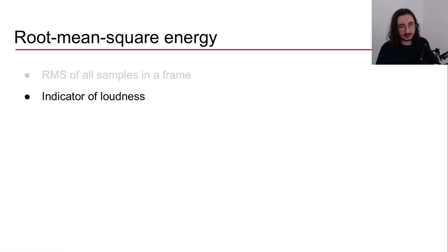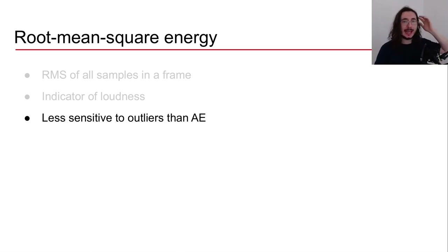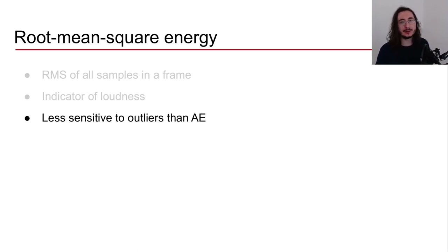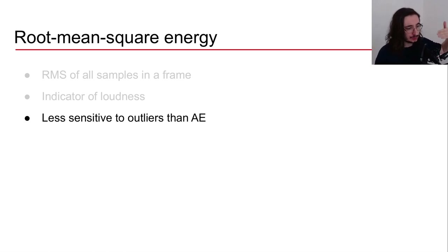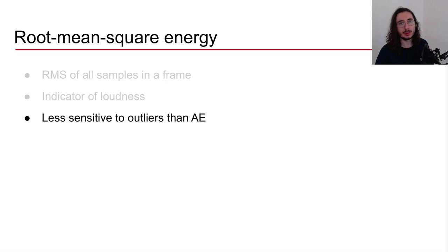Root mean square energy is also an indicator of loudness because energy is strictly related to loudness. A key advantage is that it is less sensitive to outliers than amplitude envelope — instead of sampling a single value, we get information from all samples in the frame and compute the RMS across them, making it more robust to amplitude spikes.